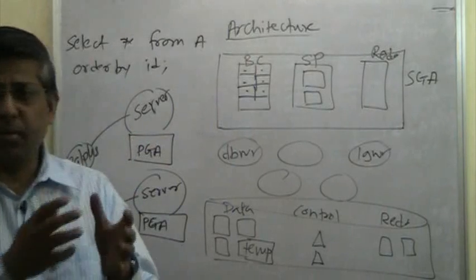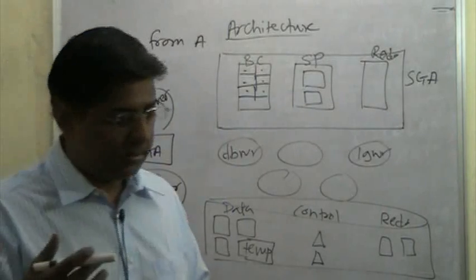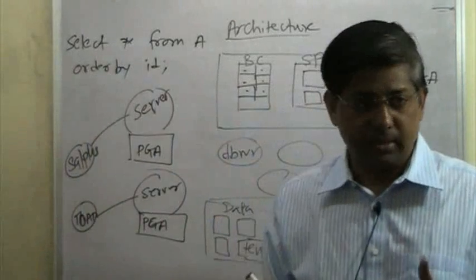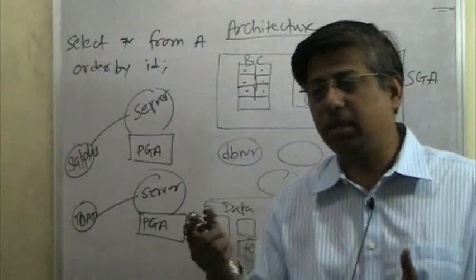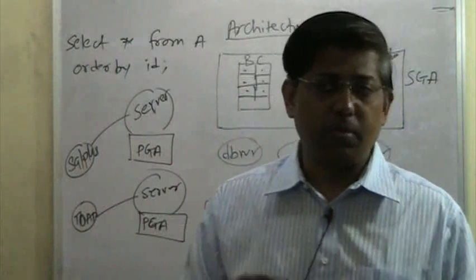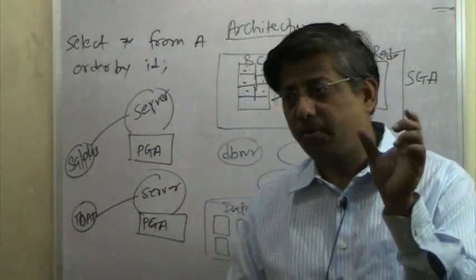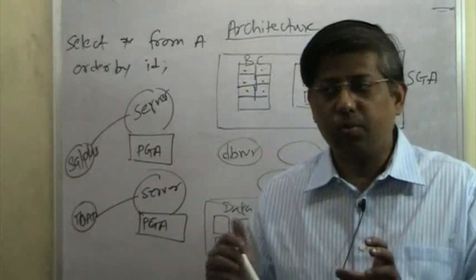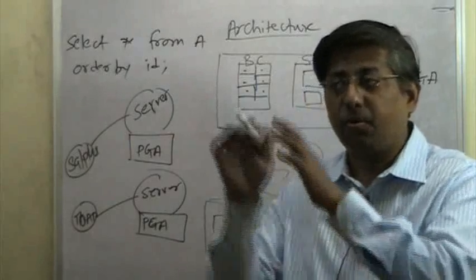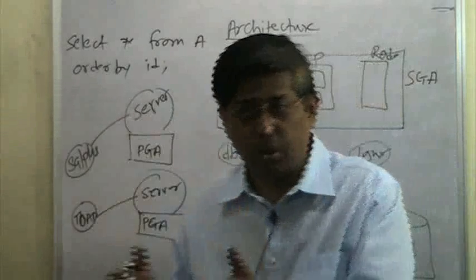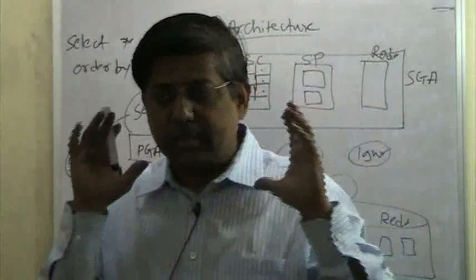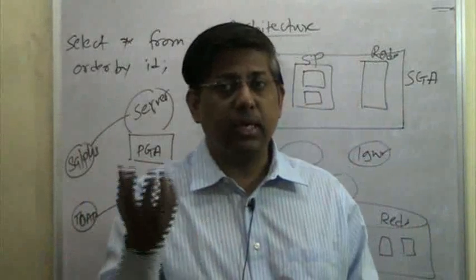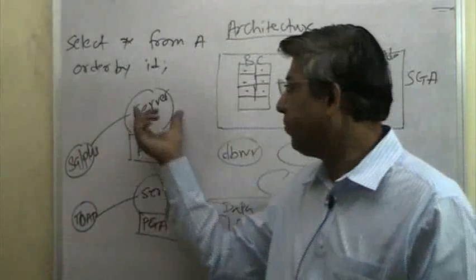Now, if you go back to the programming roots, any program that you execute will require a certain amount of memory. If you add two numbers, A plus B, C is equal to A plus B. You want to add two numbers, there will be a memory area for variable A, B, and C. And there will be some other memory area associated for the actual program execution code. So, there is basically some memory requirement for every program that is running. And that is basically for that specific program.